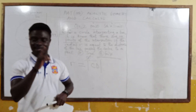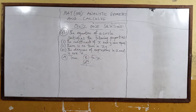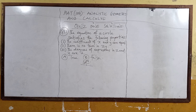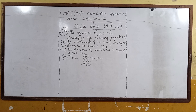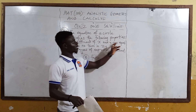Let's move on to question 17. The equation of a circle satisfies the following properties: I — the coefficient of x squared and y squared are equal; II — there is no term in xy; III — the degrees of expressions in x and y are equal to 2. True and true, B is false. So now let's see property I. The coefficient of x squared and y squared are equal.